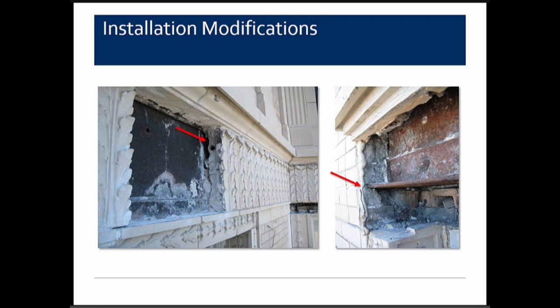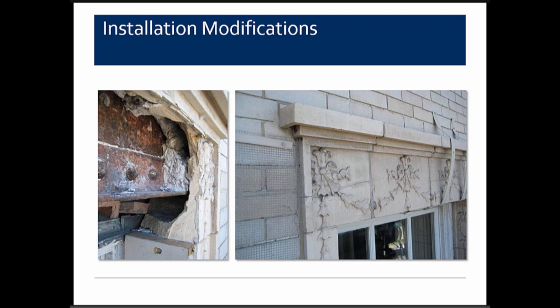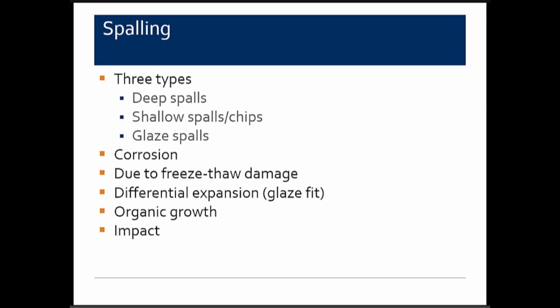Contractors make field modifications such as cutting off the back of a panel to fit around a spandrel beam, making units thinner. This affects how the angle loads the unit and how it can be anchored. In another case, an anchor hole had minimal material behind it. When terracotta is removed, you can see the angle supporting the lintel and the minimal distance from the face of the brick — likely requiring notching to fit around the angle.